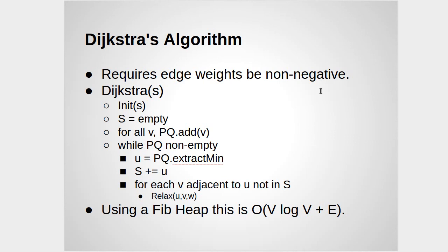So how does Dijkstra's work? Well, it starts off, once again, by calling that initialization, and then it creates this set S, which is empty. It also uses a priority queue, and it adds all the vertices to that priority queue, and the priority for them is based upon the current distance to them. So remember that init sets things up so that the start node has a distance of zero, and everything else has a distance of infinity.